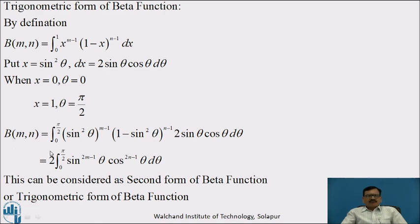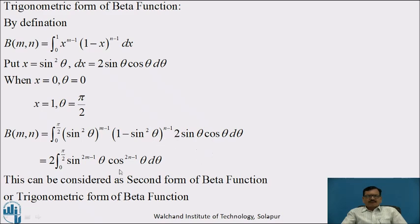Therefore, Beta(m, n) is equal to integration from 0 to π/2. Putting x equal to sin²θ, that is sin²θ raised to (m-1) into (1 - sin²θ) raised to (n-1), and the value of dx as 2 sinθ cosθ dθ. Taking 2 outside the integral, we get twice the integration from 0 to π/2 of sin raised to (2m-1) θ and cos raised to (2n-1) θ dθ.